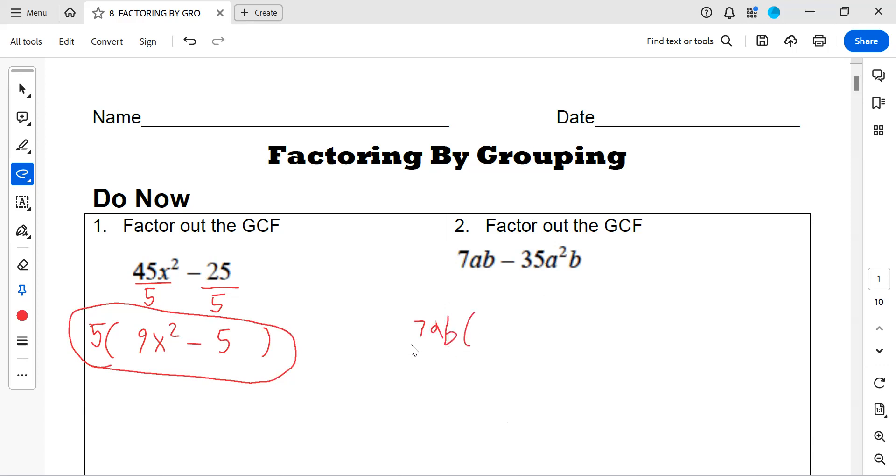So my greatest common factor as a whole is 7ab. Now I'm dividing each term by whatever my GCF is, same flow as the previous lesson. This cancels to give me a 1, this cancels to give me another 1, and that cancels to give me a 1. So 1 times 1 times 1 is going to be just 1. Negative 35 over 7 is going to give me negative 5.